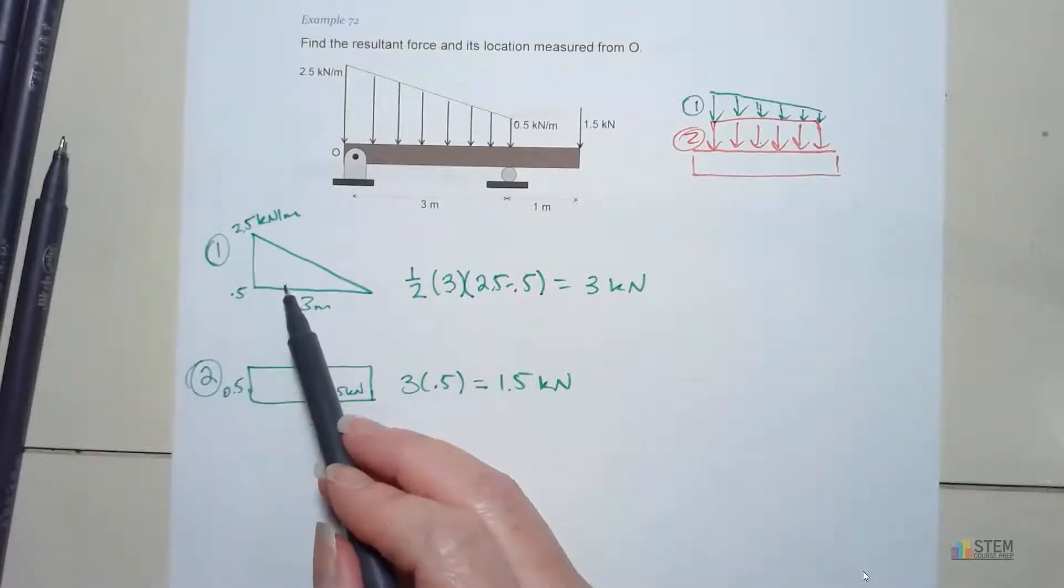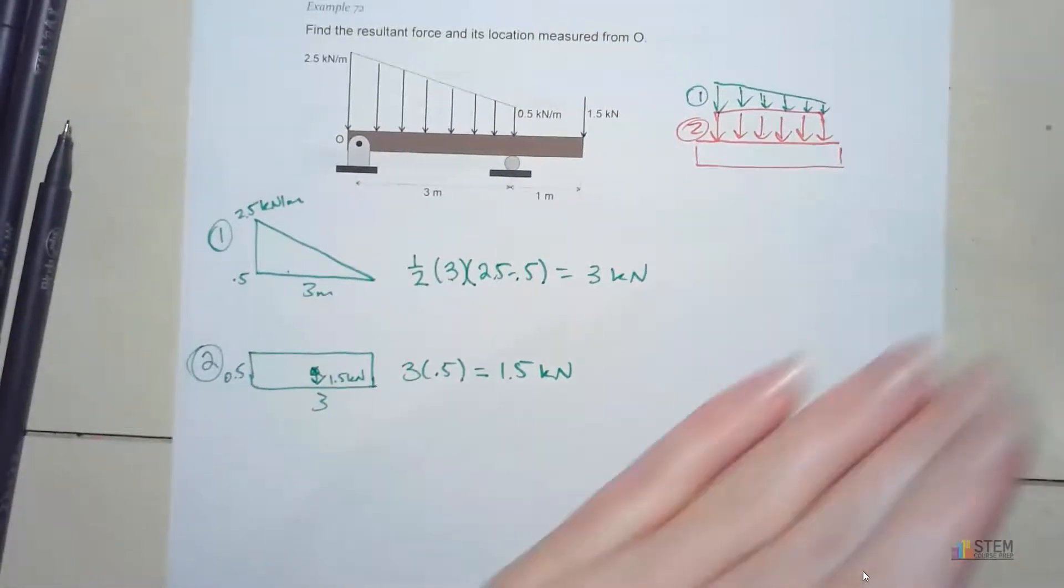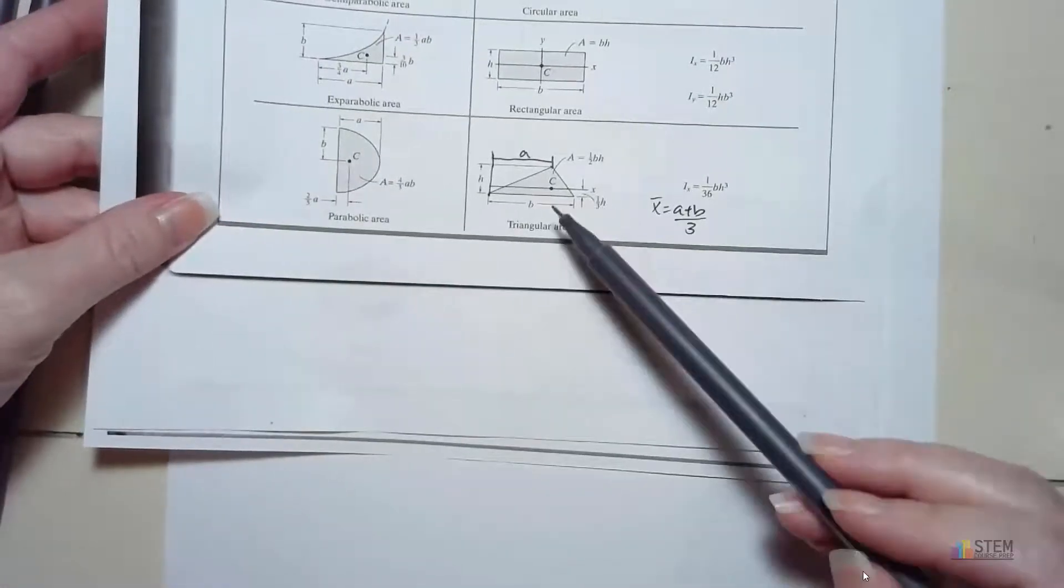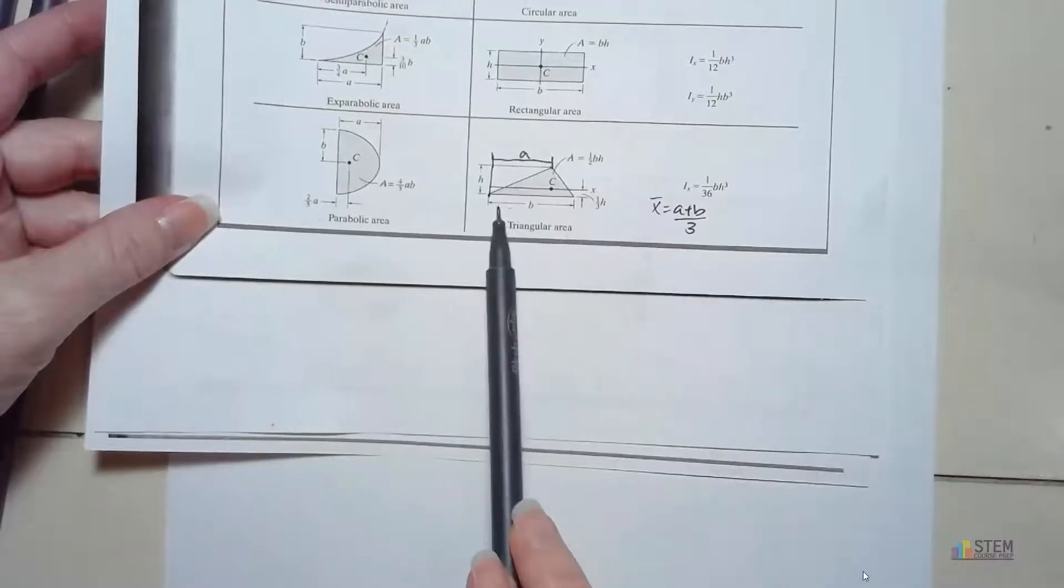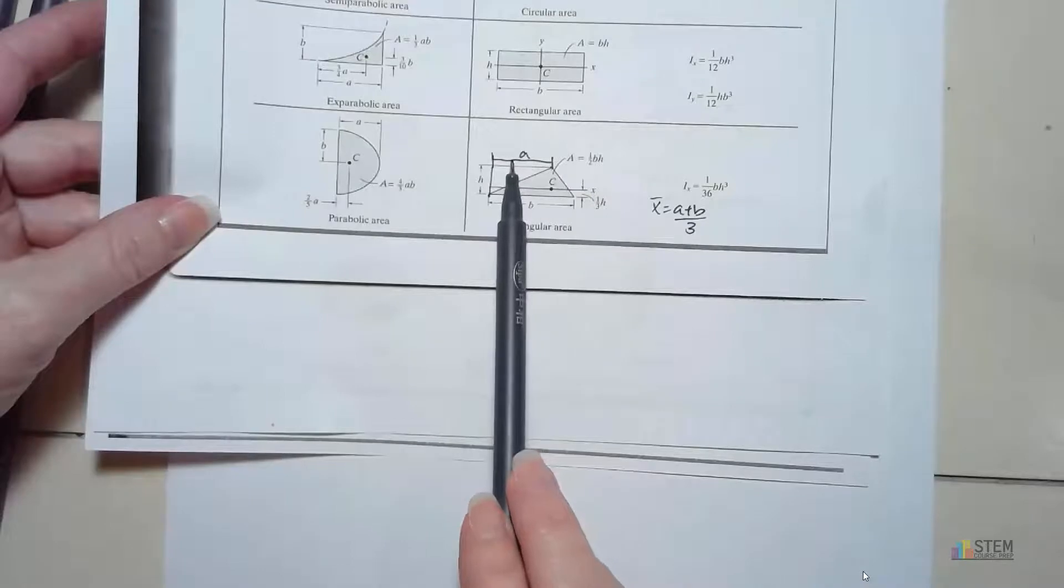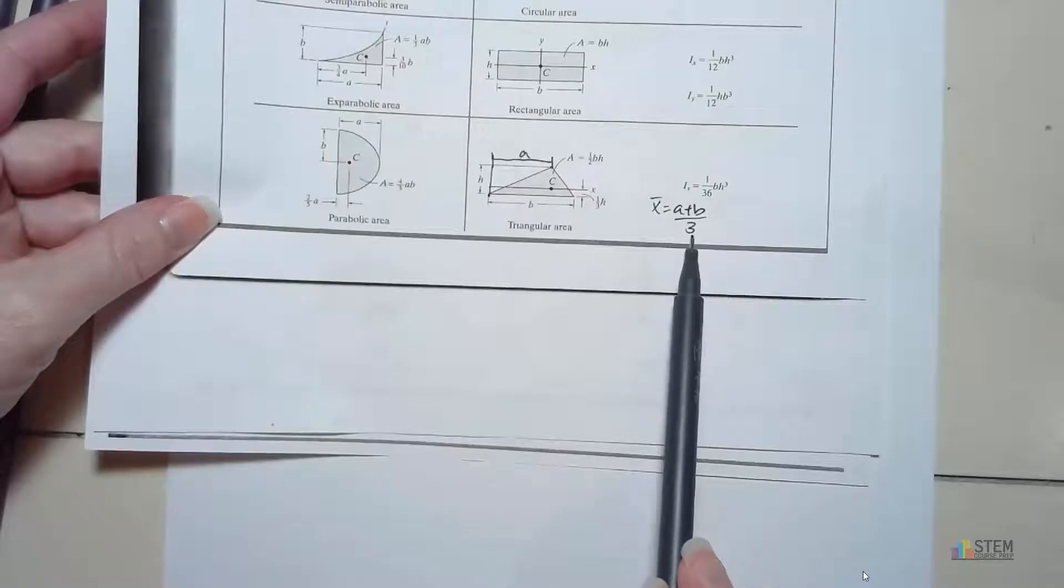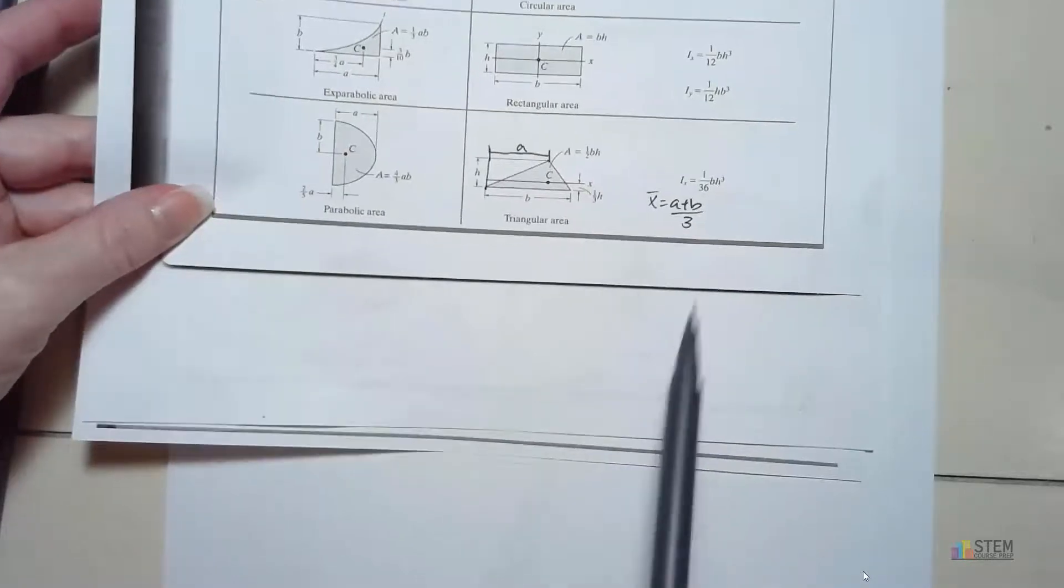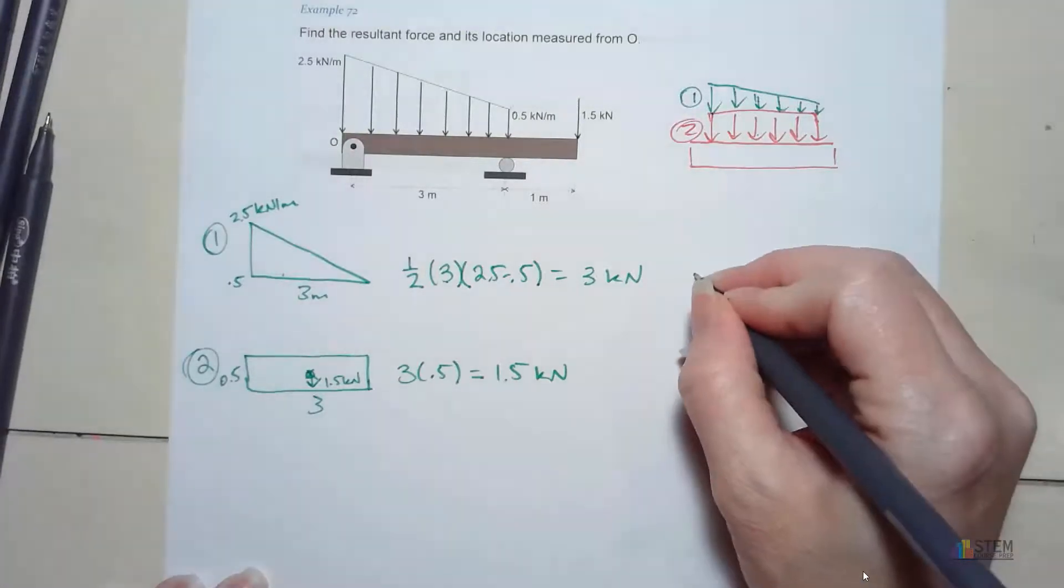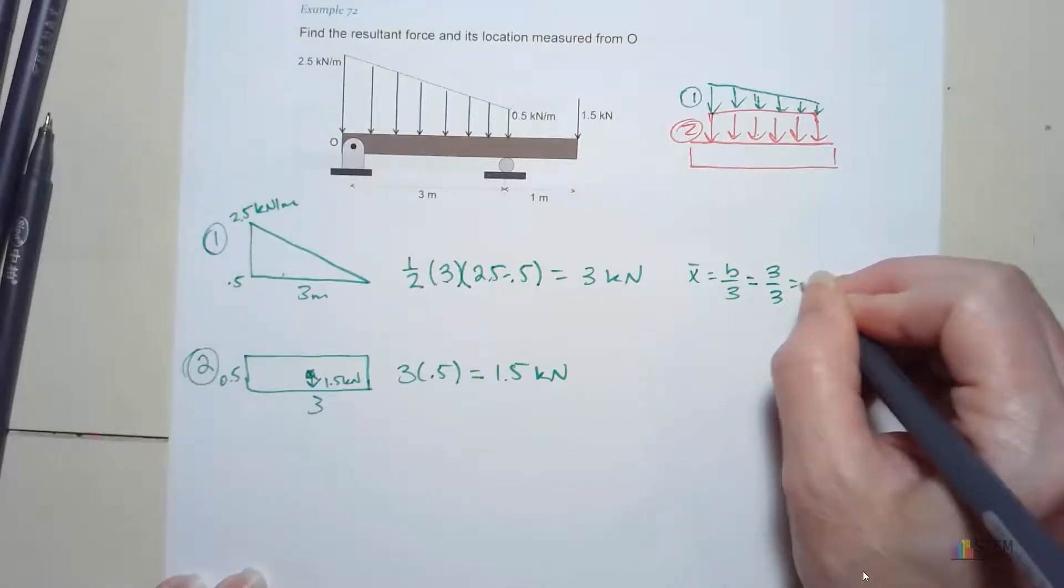Now, the triangle, you might need to go back and look at the centroid table. So if we go back and look at that, here we have it. For a triangle, remember, we have the base, and then we have this a distance, but for a right triangle, a for us is going to be 0. So x bar is going to end up being b over 3. That's the one we need. So let's just put x bar is b over 3. That gives us 3 over 3, which is 1. And that's going to be measured from the left.